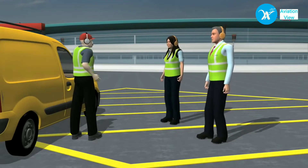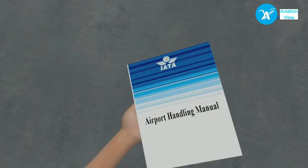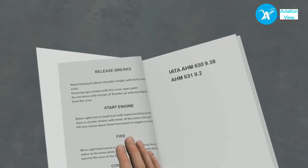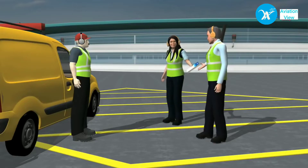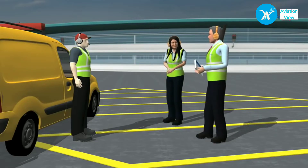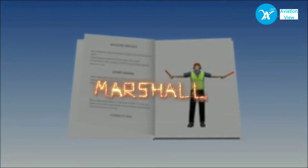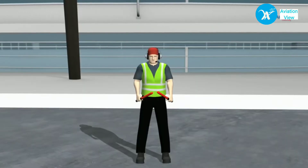Marshalling training is performed according to IATA AHM 630, section 9.38, and AHM 631, section 9.2. There are different marshalling signals for aircraft marshalling and for ground support equipment. Let us first start with aircraft marshalling and begin with the basics.